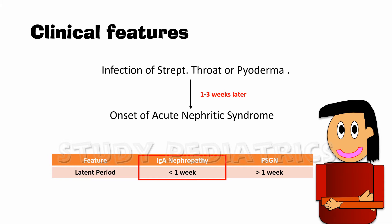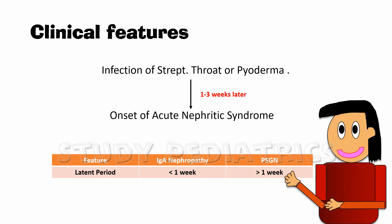As it crosses the 1-week mark, we shift to PSGN, as it is rare for IgA nephropathy cases to develop after a week. The latent period is used to differentiate since the signs and symptoms of PSGN and IgA nephropathy are almost the same. Hence, it is important to consider this latent period in the patient's history.